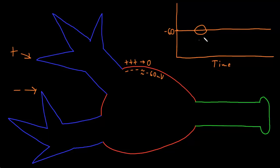Graded potentials do not pass into the axons of most types of neurons. Instead, most axons have a different membrane potential change called an action potential. Action potentials start at the area called the trigger zone, which is the initial segment or the start of the axon. They start when the combined effect of the graded potentials at any moment in time brings the membrane of the trigger zone across a certain value called the threshold potential.